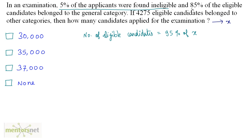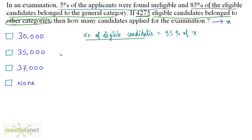It is given that 85% of eligible candidates belong to the general category. The number 4275 refers to eligible candidates belonging to other categories. If 85% belong to the general category, then the other 15% belong to other categories — since 100 minus 85 is 15. So 15% of the eligible candidates belong to other categories, meaning we need to calculate 15% of 95% of x.